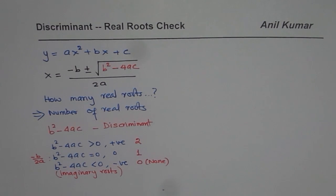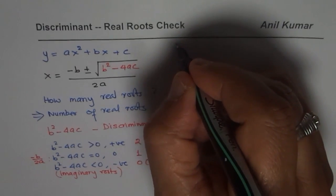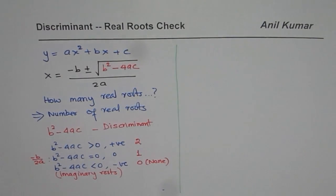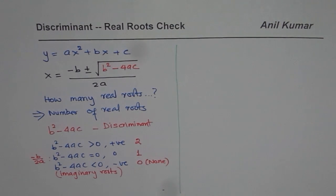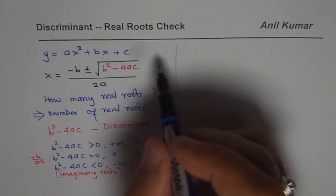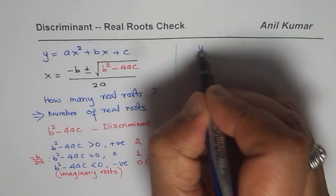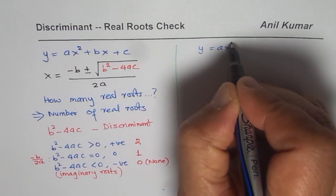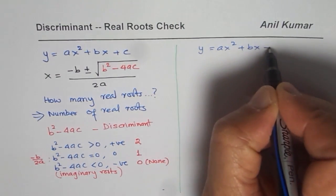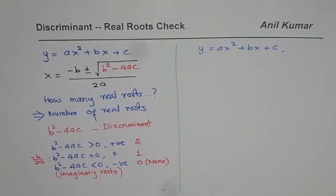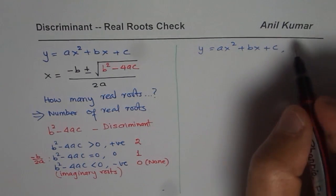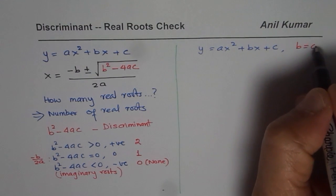So that is the basic which we all understand. Now we will analyze quadratic equations in different forms and generalize some of our results. In this particular video, let me begin by assuming that b is 0. So we have the same equation y equals ax squared plus bx plus c, but with the condition that b equals 0.